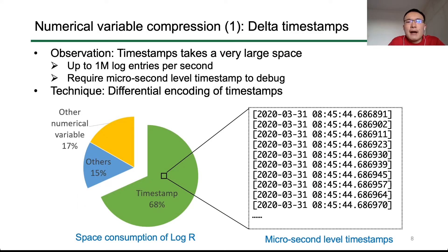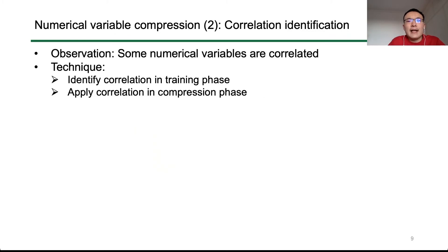Now we introduce our three techniques to compress numerical variables. First, we observed that time steps take a very large part. For example, in one log type, time steps take 68% of the space. This is mainly because logs can be generated at up to 1 million entries per second, and AliCloud must keep microsecond-level time steps for debugging. To compress this, we apply traditional differential encoding and store only the differential results of adjacent time steps.